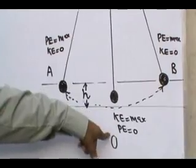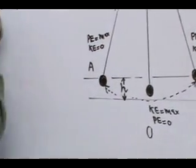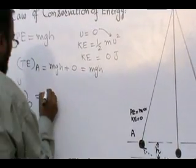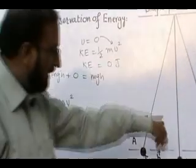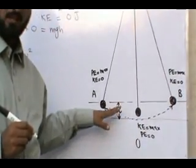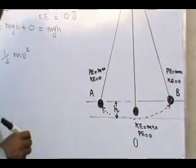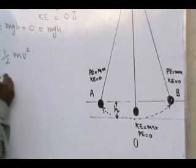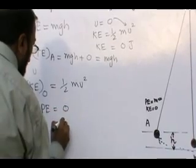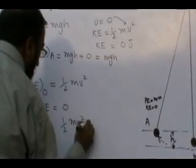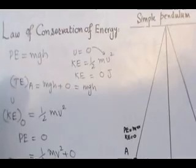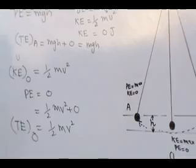Now velocity at point O is maximum, that is v. So kinetic energy at point O is equal to half mv squared. But the distance from A to O position is zero — that is the reference point — so there is no height for the bob. Its potential energy will be zero due to height being zero. So kinetic energy plus potential energy gives half mv squared plus zero, that is equal to half mv squared. It means total energy at point O is half mv squared.